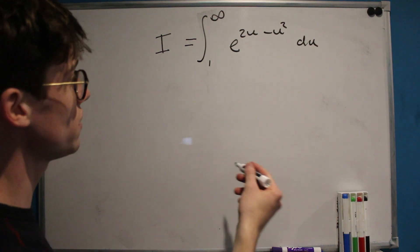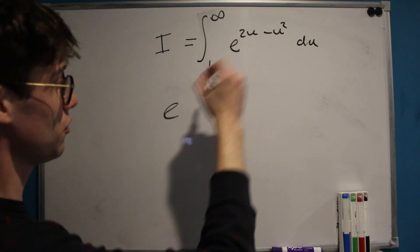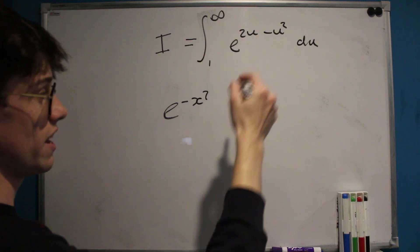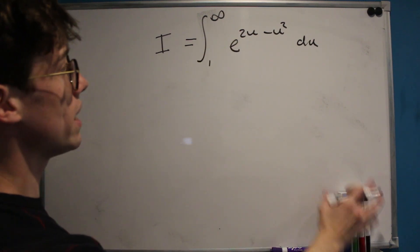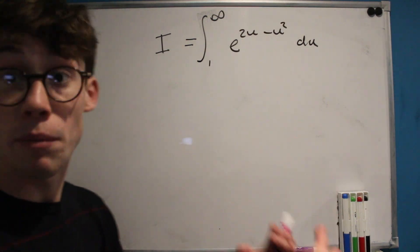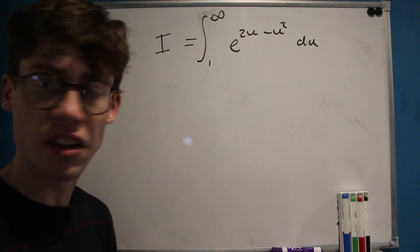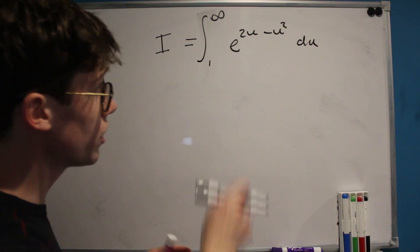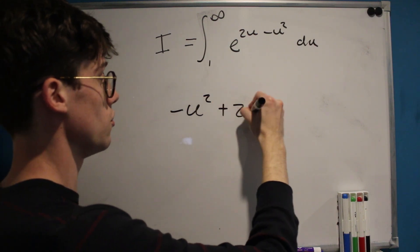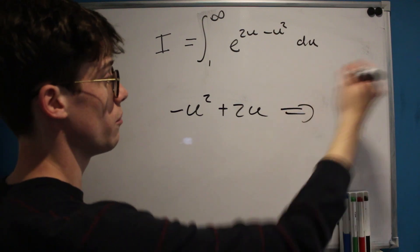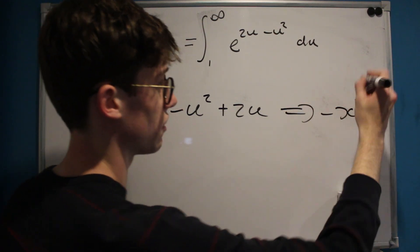And so perhaps a smart next step would be, given that the Gaussian integral is of e to the negative x squared with respect to x, could we make our exponent something squared and find a comparison point? Now in our case we'd be looking to take negative u squared plus 2u into something of the form negative x squared.